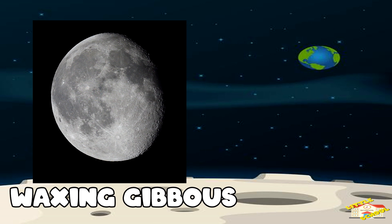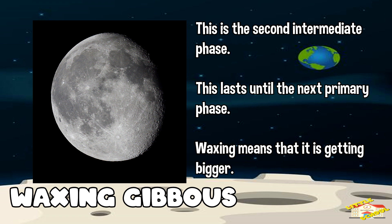The waxing gibbous moon. This is the second intermediate phase which lasts until the next primary phase. Waxing means that it is getting bigger.